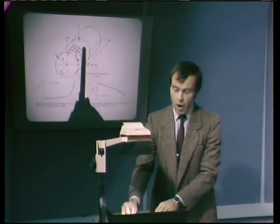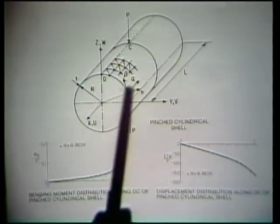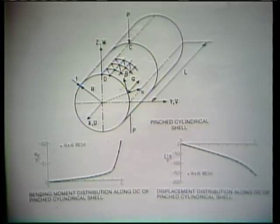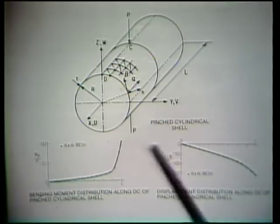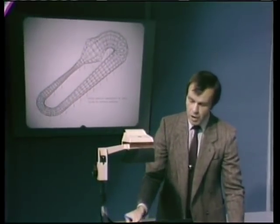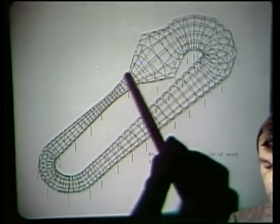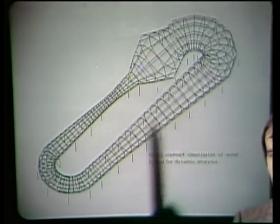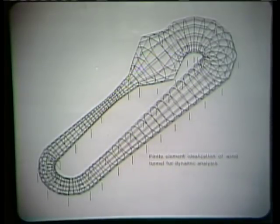Here you see the model of a shell structure subjected to a pinching load — a load up here and a load down there. These are the triangular elements used in the idealization of that shell, and the resulting bending moments and displacements along line DC are plotted as predicted by the finite element analysis. Finally, here you see the finite element idealization of a wind tunnel used for dynamic analysis, where a large number of shell elements were employed and eigenvalues of the system were calculated using the subspace iteration method.